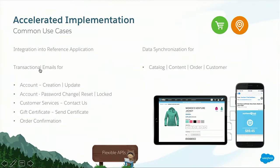Commerce Cloud does support transactional emails out of the box, but by leveraging Marketing Cloud we have a much more powerful tool — not just transactional emails but also event tracking that leads into Journey Builder to build out a full customer journey. Out of the box in the first release, we started with transactional emails for account creation, password resets, customer service, order confirmation, and sending gift certificates. We also sync data with Marketing Cloud — you can schedule your data sync via the Commerce Cloud admin interface based on the cadence you need, whether five times a day or once a week.